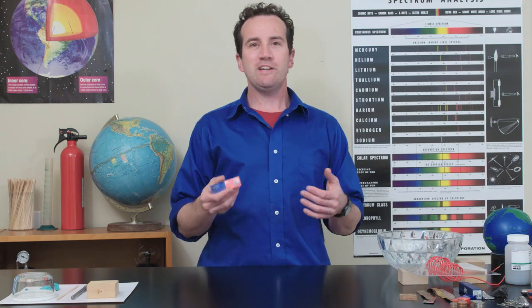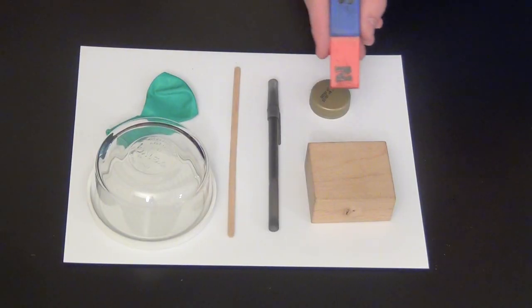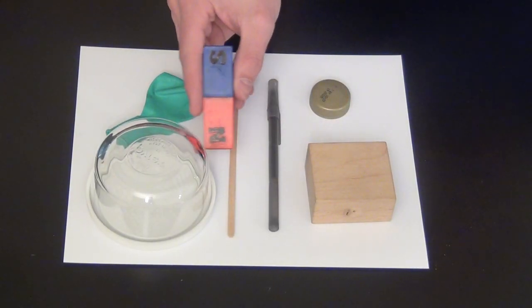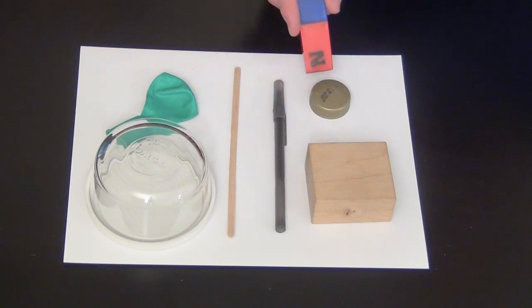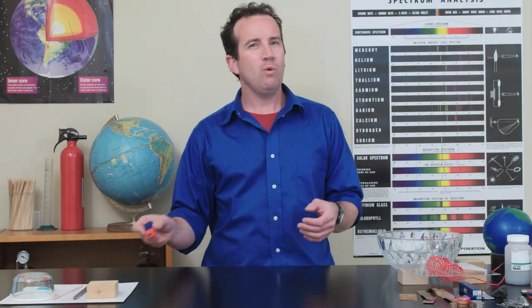Now, generally, magnets do not work on wooden, glass, or plastic objects. It has to be metal. But what about money? Money is made of metal.